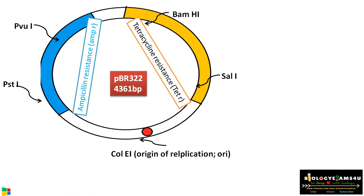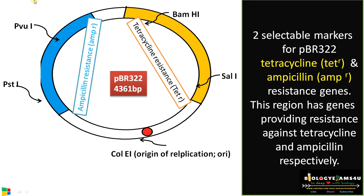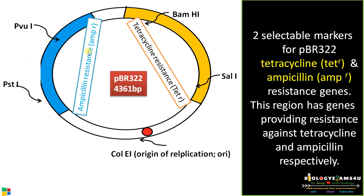As you all know, in PBR322 there are two selectable marker regions. The first one is the ampicillin resistance region, and the second one is the tetracycline resistance region. These regions code for genes that provide resistance against tetracycline and ampicillin antibiotics respectively.